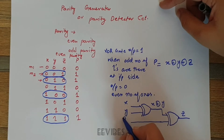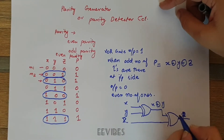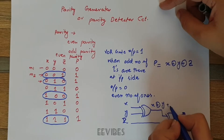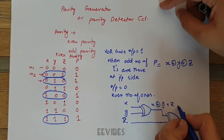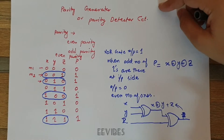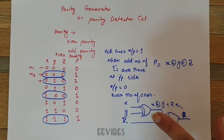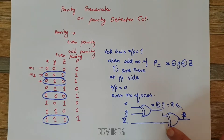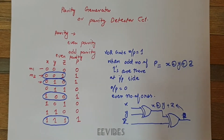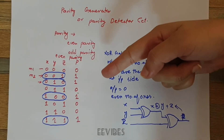So basically P is equal to X XOR Y XOR Z. This gives you the parity function P at the output.